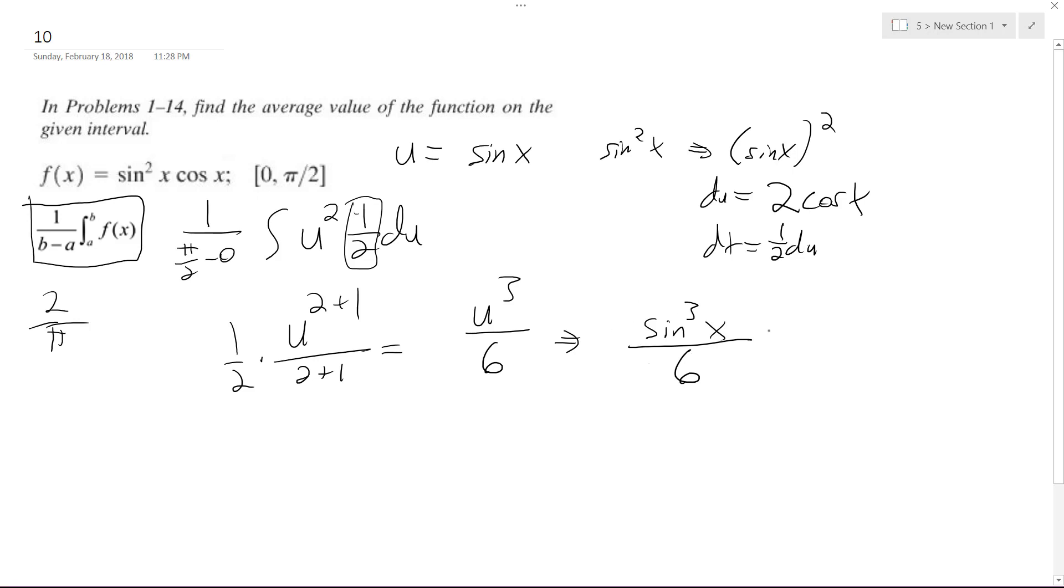And then I got the 2 over π. So this cancels out, and we're simply left with 1 over π, and then we have sine cubed—I'm going to put the 3 out here too. So it's 1 over 3π, and then sine cubed of x.